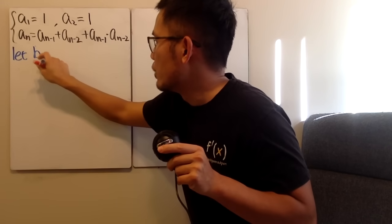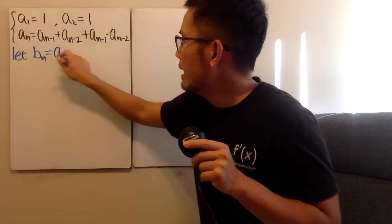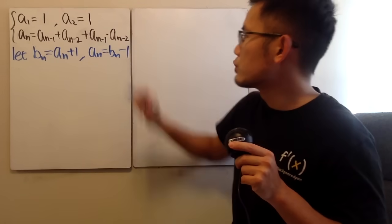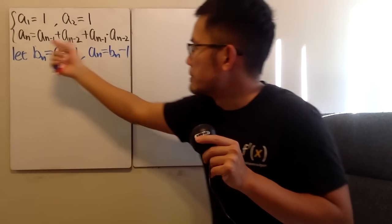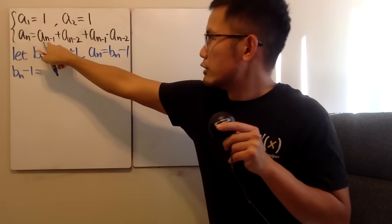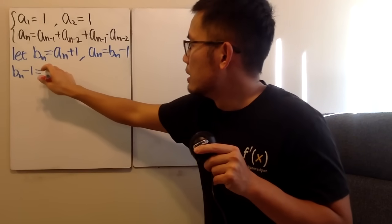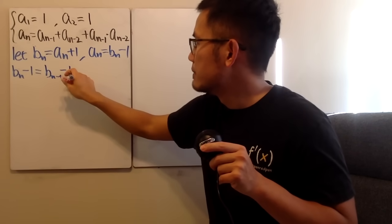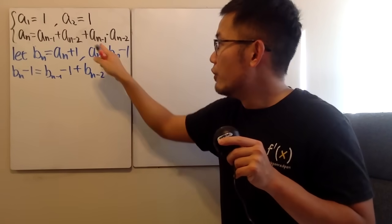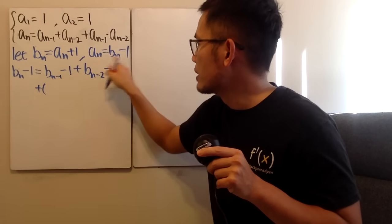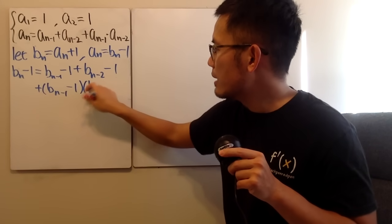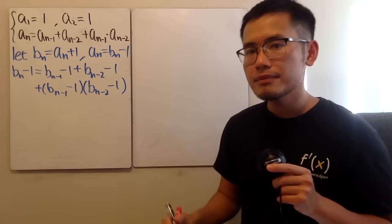Let's go ahead and let another sequence b_n, where b_n equals a_n plus one. This is equivalent to a_n equals b_n minus one. If we do the substitution, we have b_{n-1} minus one equals — so a_{n-1} becomes b_{n-1} minus one, plus b_{n-2} minus one. And then for the product part, we'll have b_{n-1} minus one multiplied by b_{n-2} minus one.